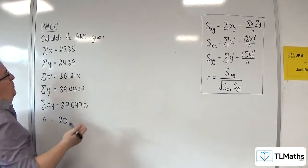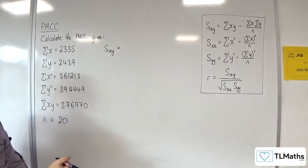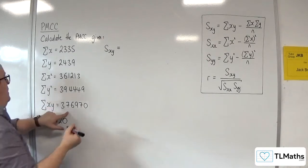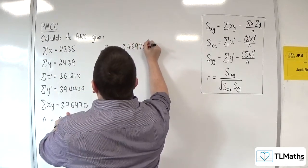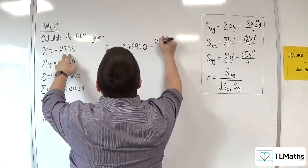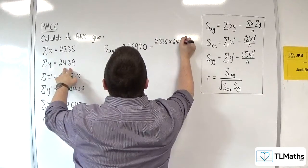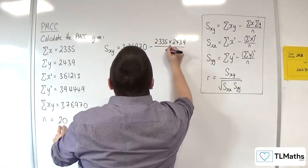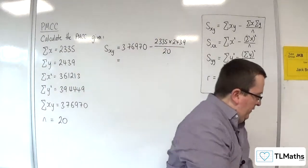Okay, so what we're going to need is to calculate each of these. So, S_XY is up first. So, we've got the sum of XY. So, we've got 376970. Take away the sum of X, so 2335, times by the sum of Y, 2439, divided by N, which is 20. Okay, so that's the first bit.